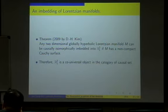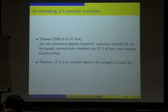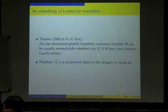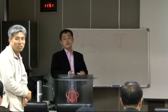This is the final characteristic property of Minkowski two-space. In the category of causal spaces, to embed a space into a larger space with a certain structure preserved is a very important problem in many branches of mathematics. I have shown that any two-dimensional globally hyperbolic Lorentzian manifold can be causally isomorphically embedded into two-dimensional Minkowski space if the manifold M has non-compact Cauchy surfaces. So in the category of causal spaces, Minkowski two-space plays the role of a co-universal object. Note that this property does not hold in high-dimensional Minkowski space. Thank you.